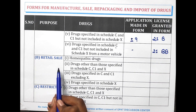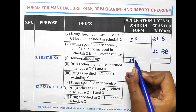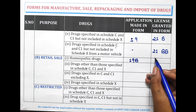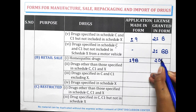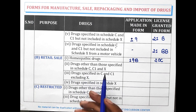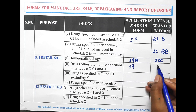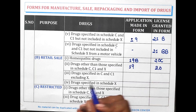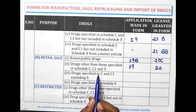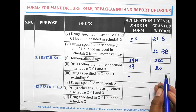For retail selling of homeopathic drugs, the application is made in Form 19B and license is granted in Form 20C. For retail selling of drugs other than those specified in Schedule C, C1 and X, the application is made in Form 19 and the license is granted in Form 20. For retail selling of drugs specified in Schedule C and C1, excluding X, the license is granted in Form 21.